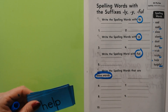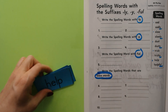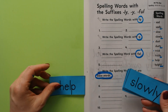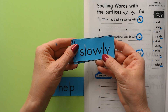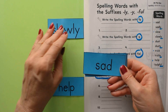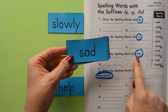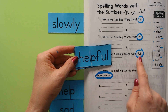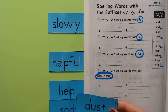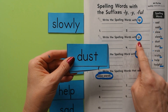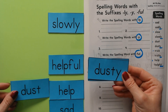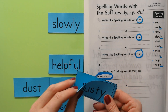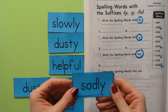We'll sort these cards out first and then write them down. Help — that doesn't have any of these suffixes, it's a base word. Slowly has -ly, so put it over here. Sad doesn't have -ly, -y, or -ful, so it's a base word. Helpful — ful is a suffix. Dust is just a base word. Dusty has a -y suffix.